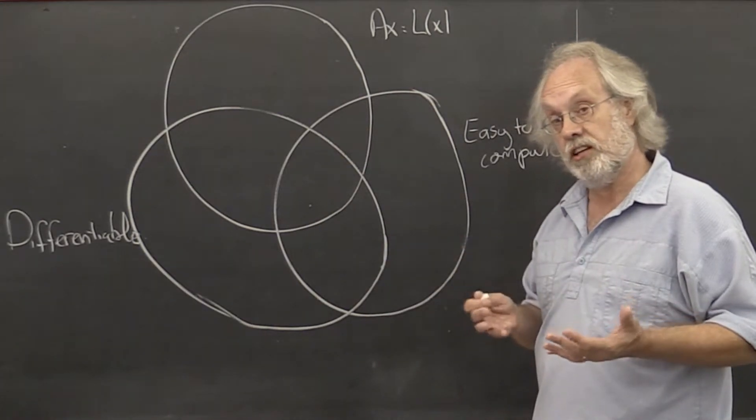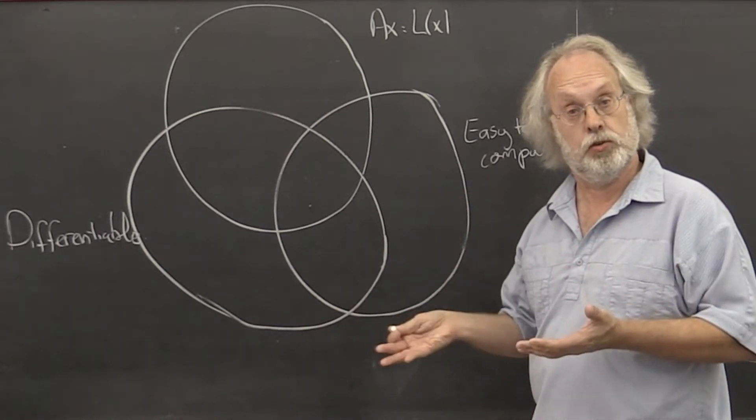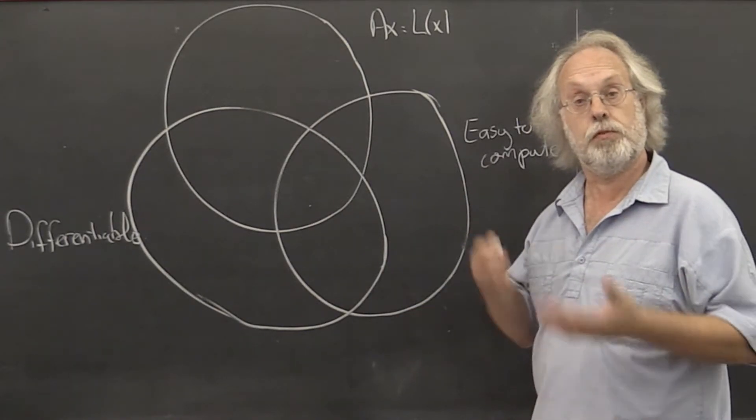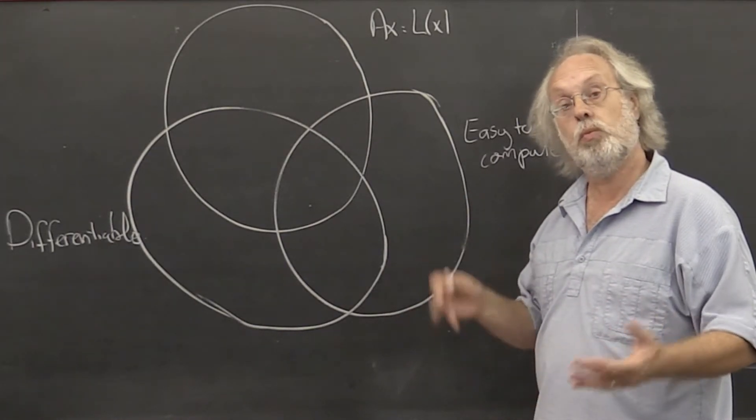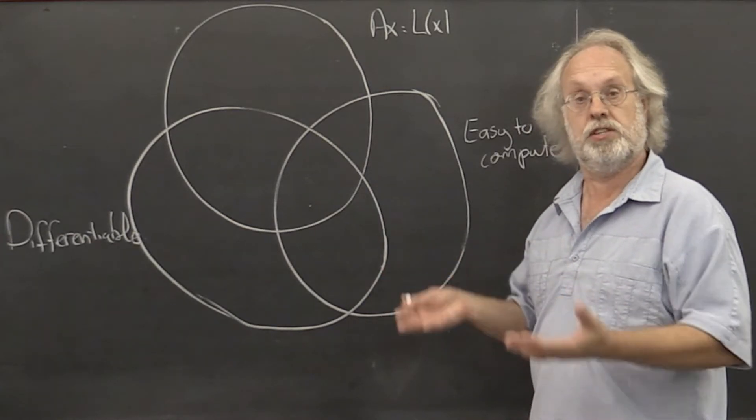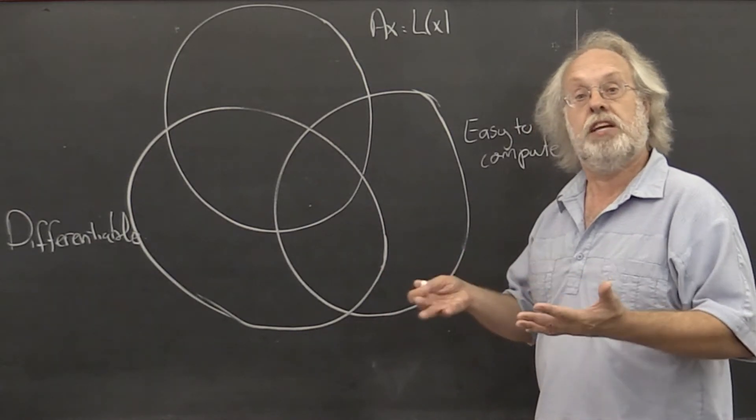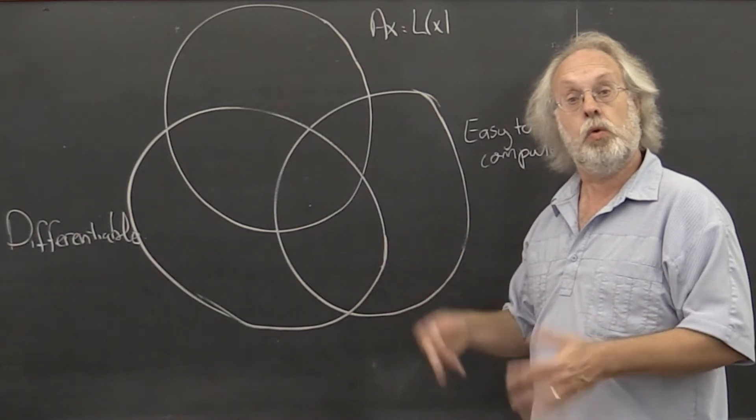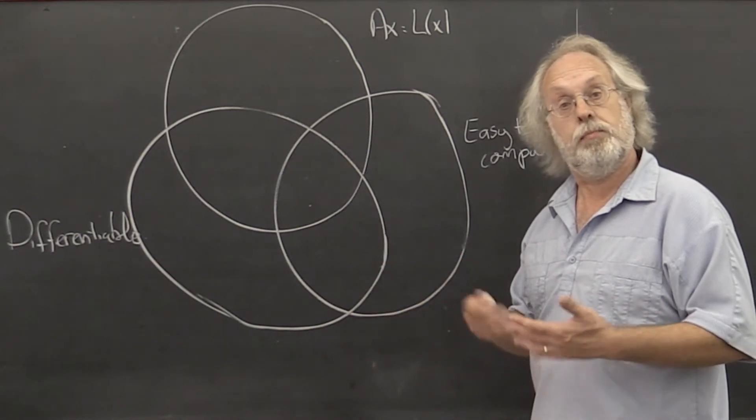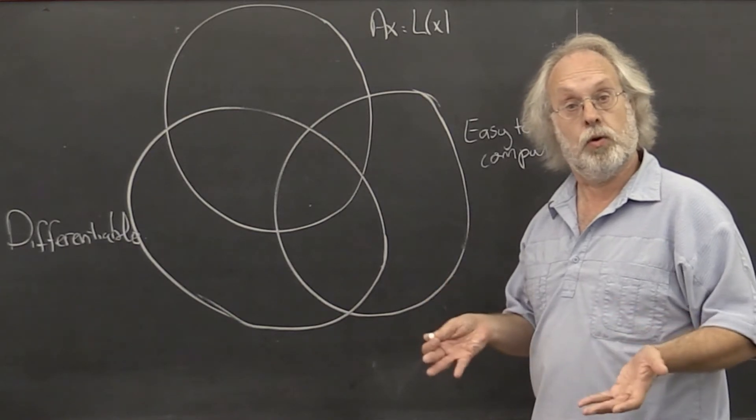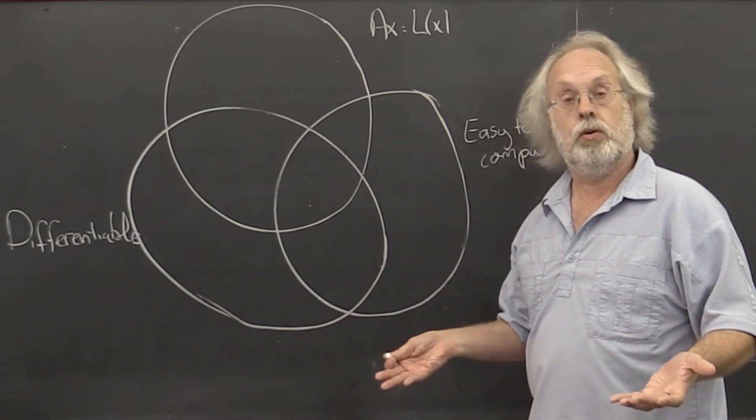Now fortunately, just like we have equivalence of norms for vector norms, we have equivalence of norms for matrix norms. So at least once we find the norm that works for a situation, if a matrix happens to be large in that norm, then we know it's large in other norms. And if a matrix happens to be small in that norm, it's also small in all the other norms.